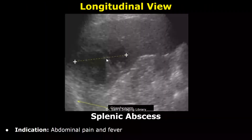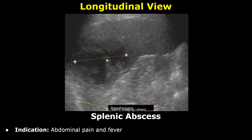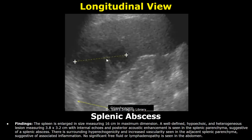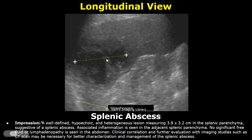Here is a case of splenic abscess. The indication was abdominal pain and fever. These are the findings: the spleen is enlarged and there is a well-defined hypoechoic and heterogeneous lesion with internal echoes and posterior acoustic enhancement, suggestive of a splenic abscess. There is surrounding hyperechogenicity and increased vascularity in the adjacent splenic parenchyma, suggestive of associated inflammation. These findings are written in the impression and clinical correlation and further evaluation with CT scan are advised.